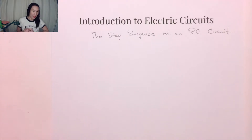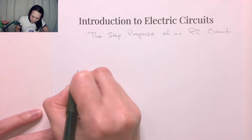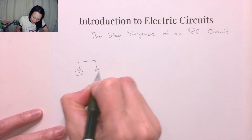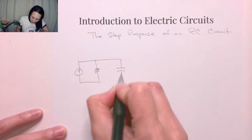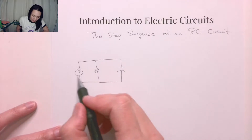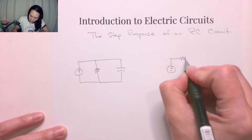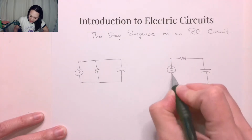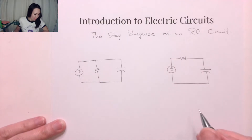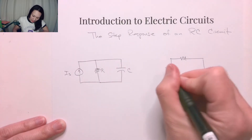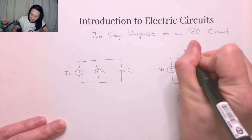Hi students, let's start looking at when we put a resistor and a capacitor together in a circuit — it's called an RC circuit. For the basic examples to start with, let's look at a resistor in parallel with a capacitor in parallel with a current source, and then its Thevenin equivalent, which is a resistor in series with a capacitor in series with a voltage source. We label these IS, R, C, and VS, R, and C.